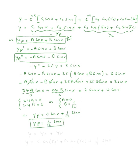Now that we have yp, the general solution is y equals the complementary function plus the particular solution. We already found yc = c₁ cosine 5x plus c₂ sine 5x, and the particular solution is (1/12) sine x. And that's it for this problem.